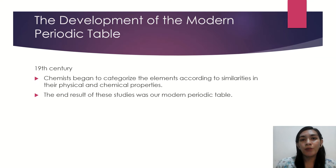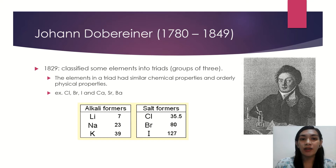First, we have Johan Döbereiner, who was known for his triads. He grouped elements into threes, wherein he observed similar chemical properties and orderly physical properties. For example, we have lithium, sodium, and potassium — these are the alkali formers. Then you also have chlorine, bromine, and iodine — these are the salt formers. These are examples of the triads of Döbereiner.